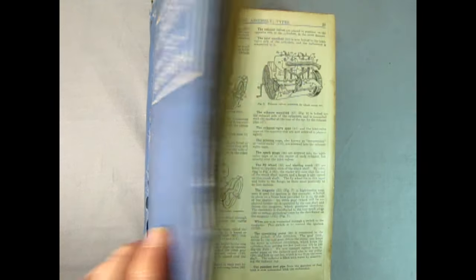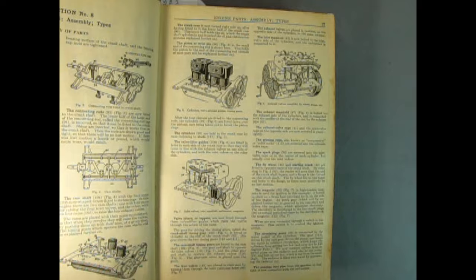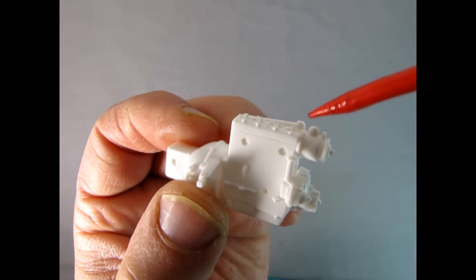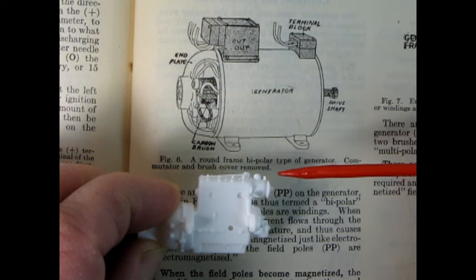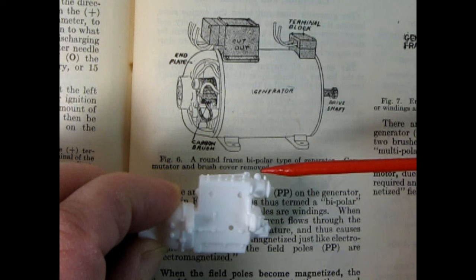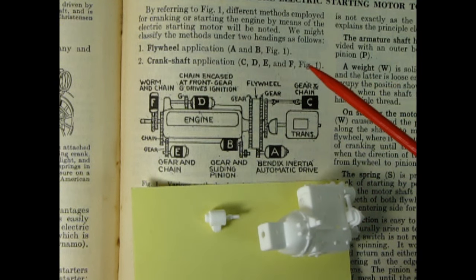Although the book covers American cars, it does show similar parts and designs used in European cars. On our Heller engine, we have a generator mounted on the top front of the engine block. The terminal block is clearly visible at the front of the generator, while the cutout box is mounted at the back. In the 1920s, there were two systems of electric starter motors for cars, the flywheel application and the crankshaft application. A gear and chain style crankshaft activated starter motor is mounted on the transmission.